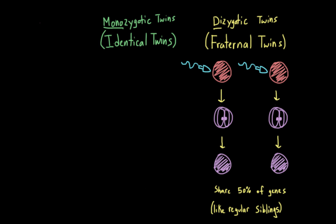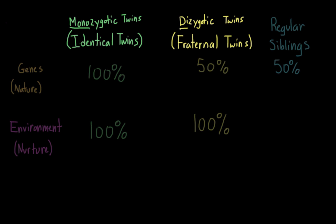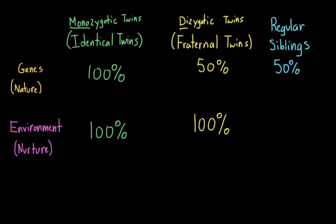Unlike regular siblings, both identical and fraternal twins are unique in that they share the same environment. They share the same prenatal environment — exposed to the same things in the womb — and are raised by the same parents at the same time, eating the same food and sharing the same toys and germs. So both identical and fraternal twins share 100% of the same environment, or as close as two people could possibly get. Regular siblings share a similar environment, but it certainly isn't 100%.